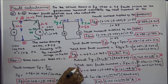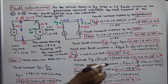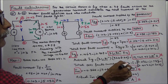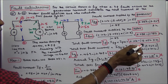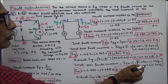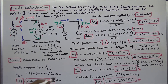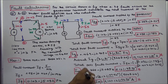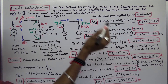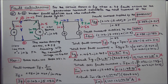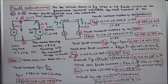Similarly, total post-fault motor current IM = IFM − load current = (0.036 − J1.783) − (0.402 + J0.302) = −0.366 − J2.085 per unit, which in polar form is 2.12 ∠−99.96° per unit. Actual IM = per-unit value × base = 2.12 ∠−99.96° × 5248.64 = 11,127.12 ∠−99.96° amps.